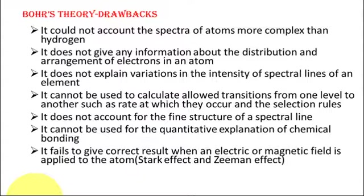It cannot be used to calculate the allowed transitions from one energy level to another, such as the rate at which they occur and the selection rules — that is, when an electron can jump from a higher energy state to a lower energy state or from a lower energy state to an upper energy state. This was also not explained by Bohr's theory.